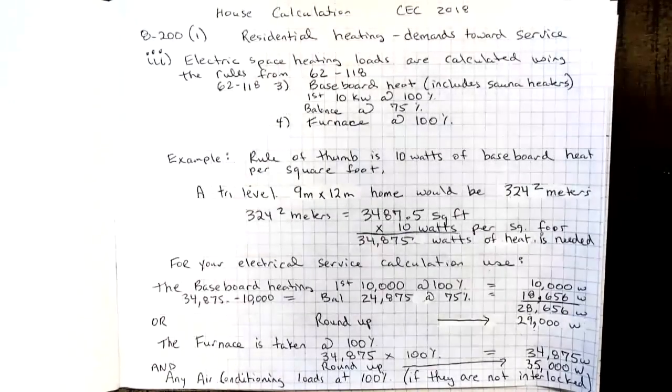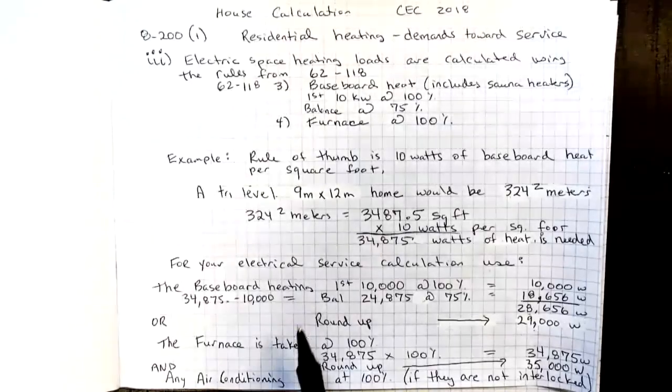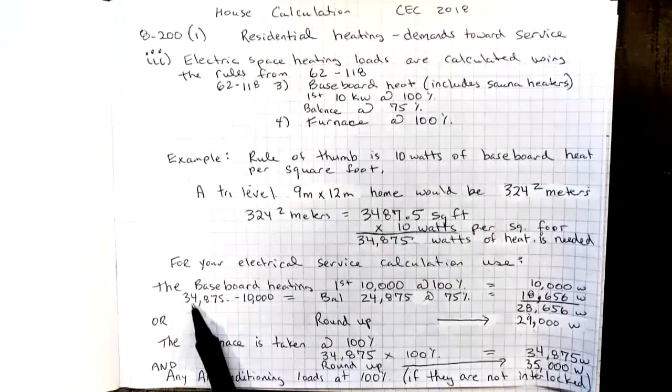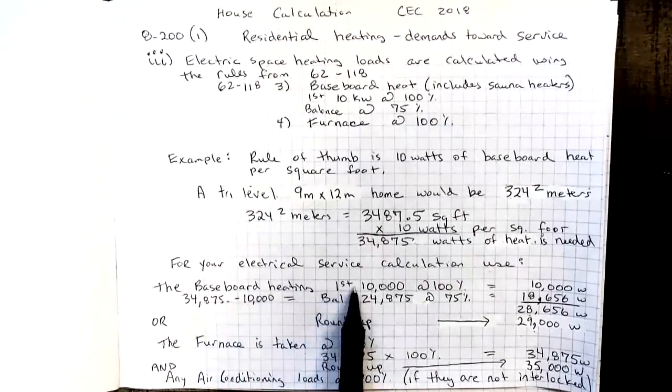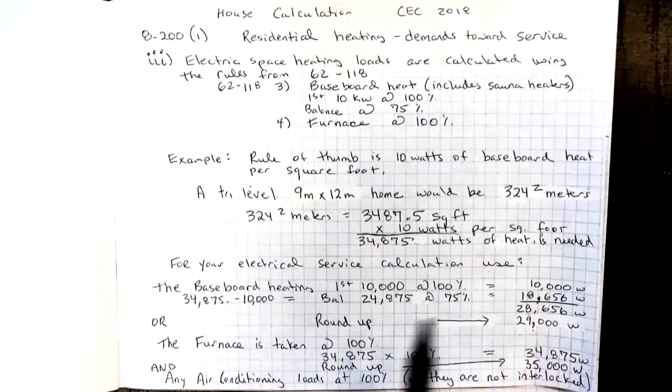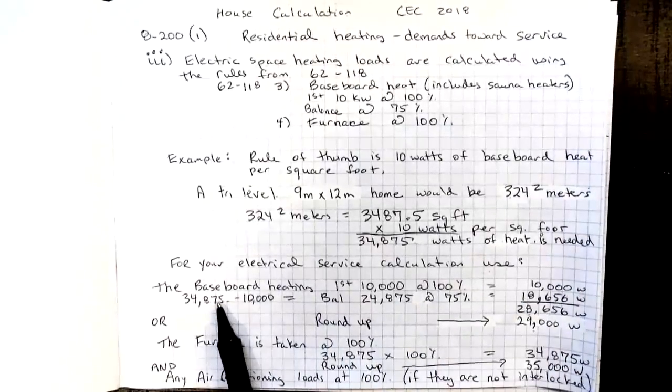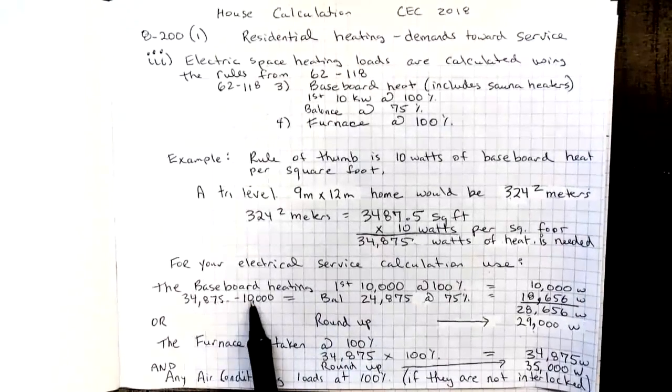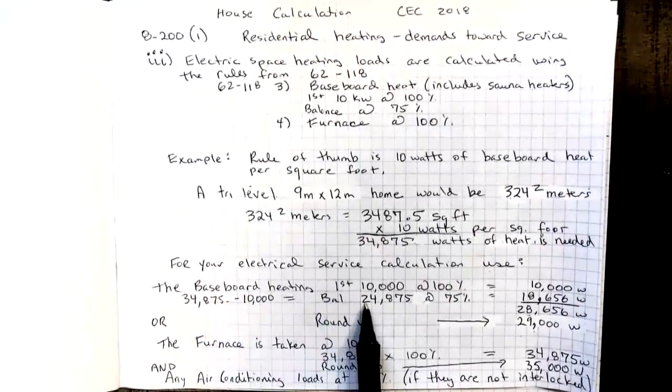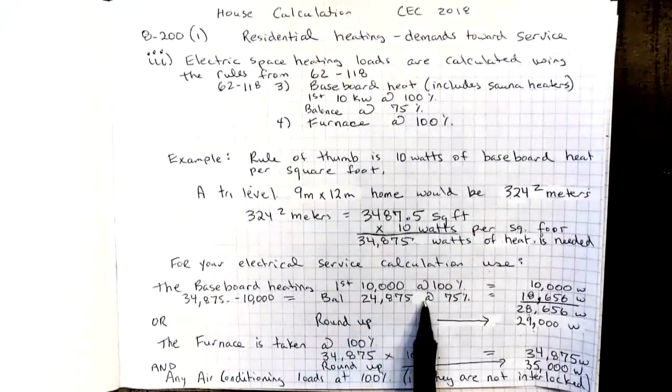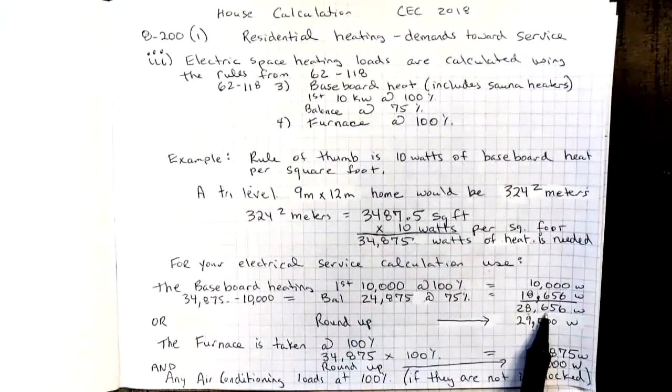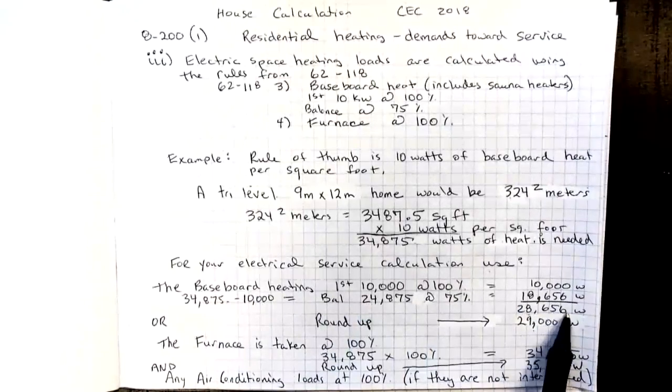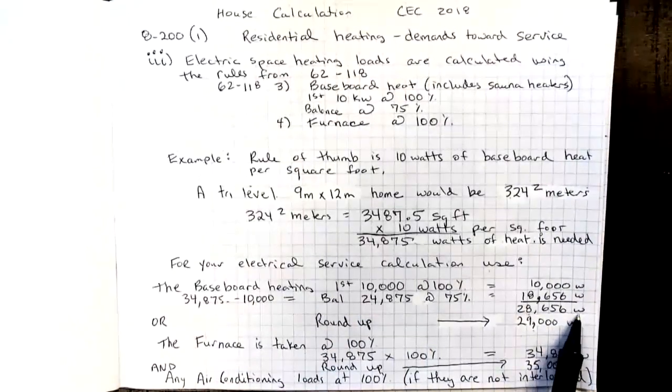When I'm calculating my service, I'm taking into account the baseboard heating. So that 34,875, I take the first 10,000 at 100% towards my demand. Then I take that number minus the 10,000, which is called my balance, and I take that at 75%. Add those two numbers together, I get 28,656 watts of heat is needed for this home.